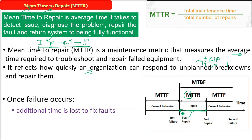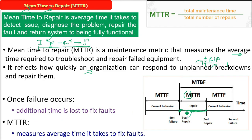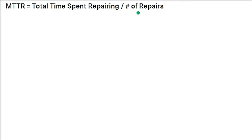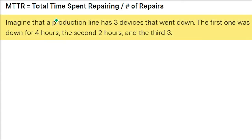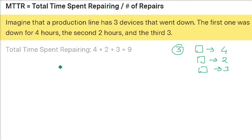MTTR equals total time spent repairing divided by the number of repairs. For example, a production line has three devices that went down: the first was down for four hours, the second for two hours, and the third for three hours. Total time: four plus two plus three equals nine hours. Number of repairs: three. Nine divided by three gives an MTTR of three hours.